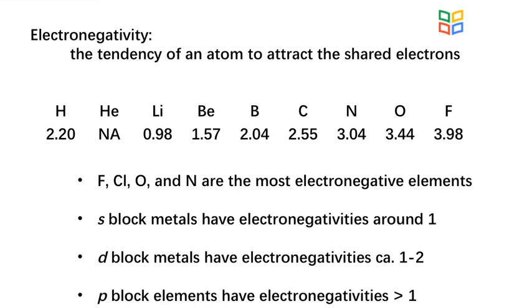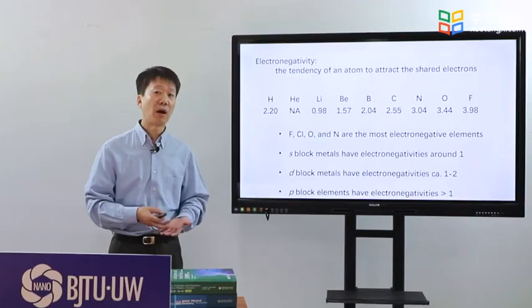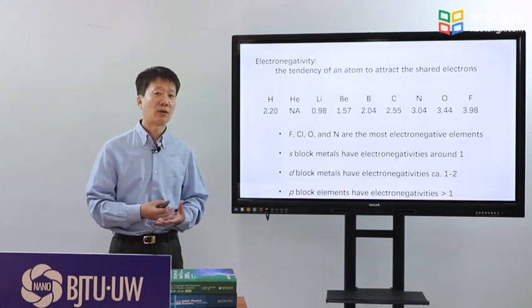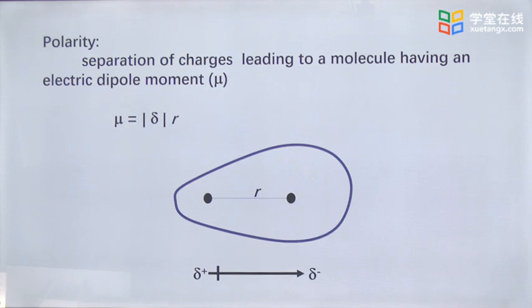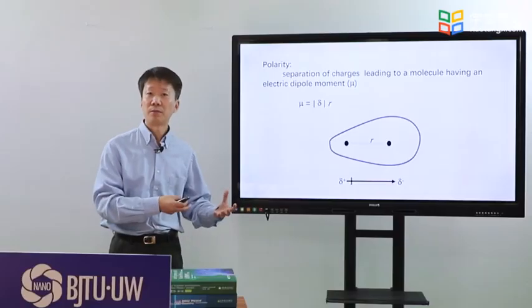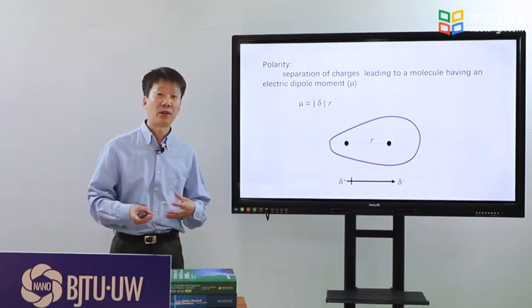D-block metals have electronegativities around 1 to 2, and P-block elements have electronegativities larger than 1. In a molecule, due to electronegativity differences, the electron pair may not be shared equally. One atom may have more charges than the other.